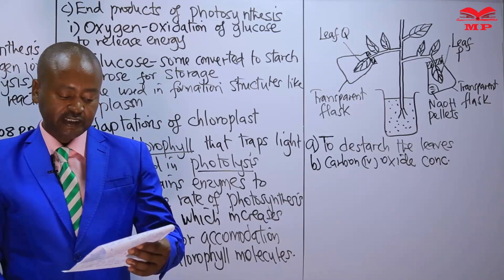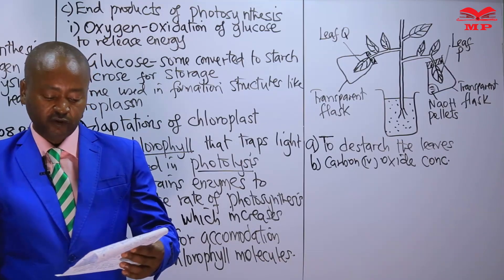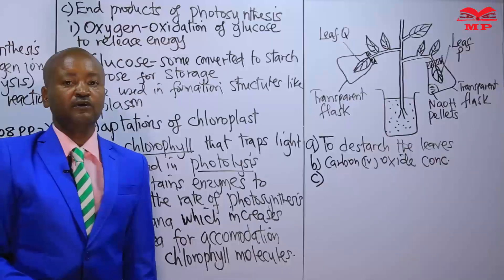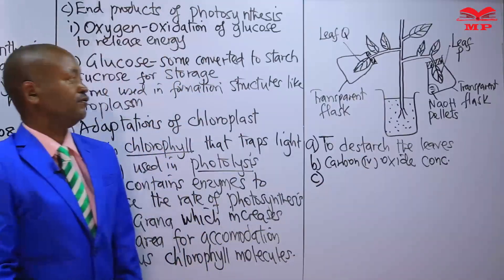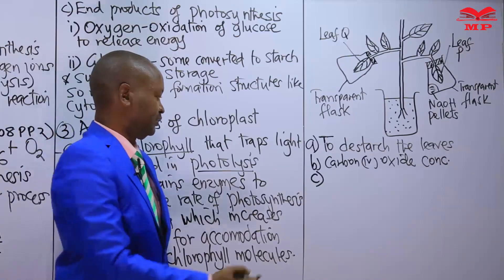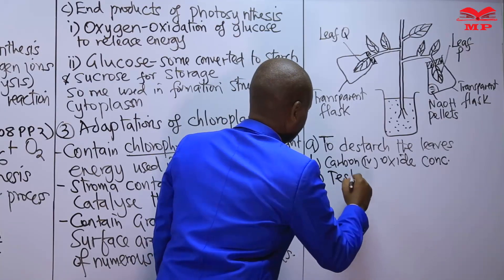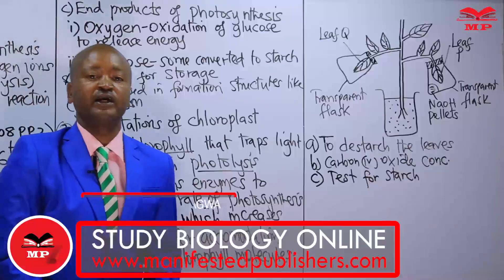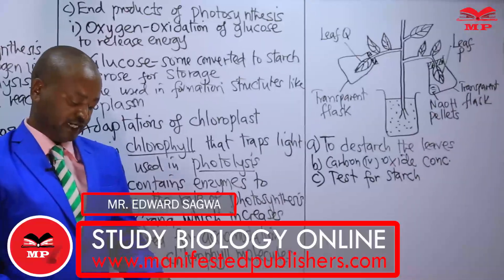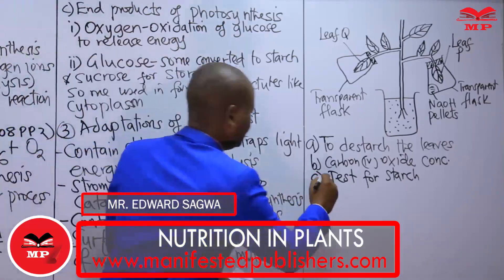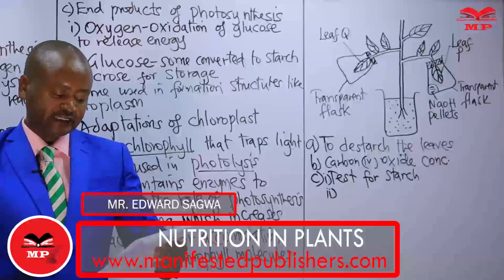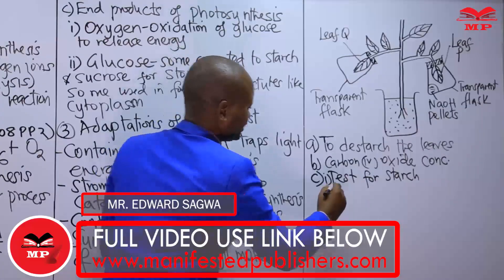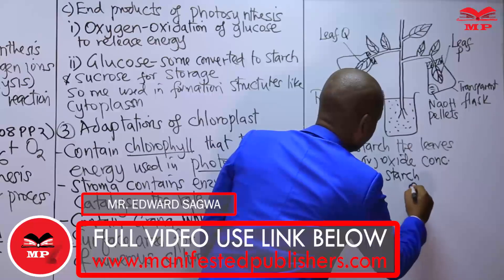Part C: Which test did the students perform to confirm photosynthesis in the leaves labeled P and Q? They were looking for the test for starch — to determine if starch is present or absent. The knowledge acquired in the practical is applied here: the test for starch. The next part of question C asks the examiner to state the results obtained in leaves P and Q, and we want results for both P and Q.